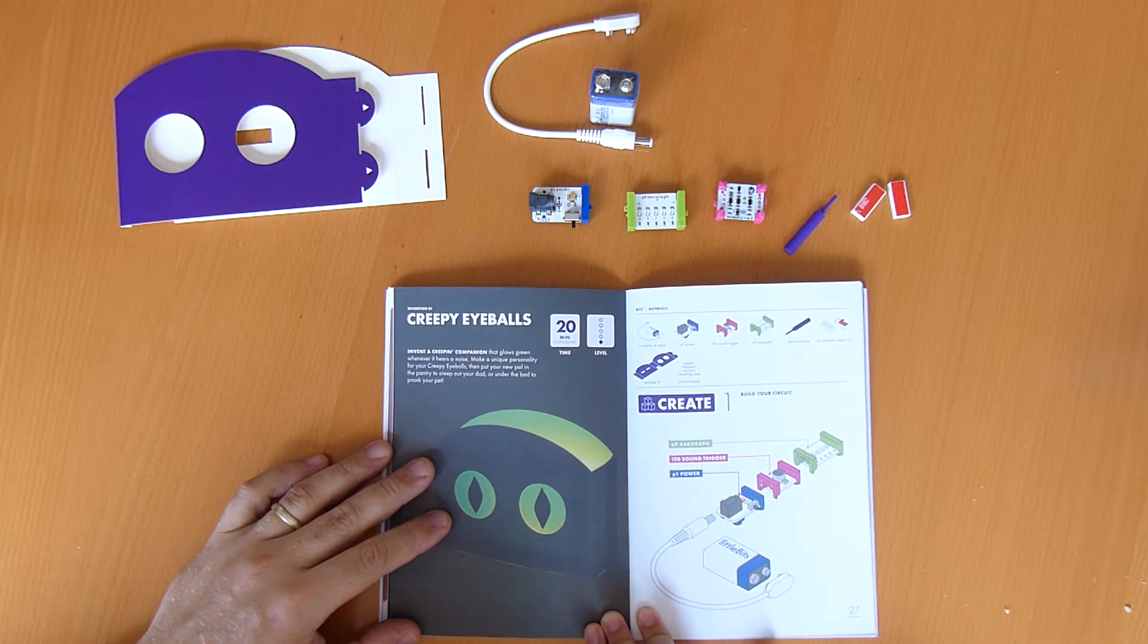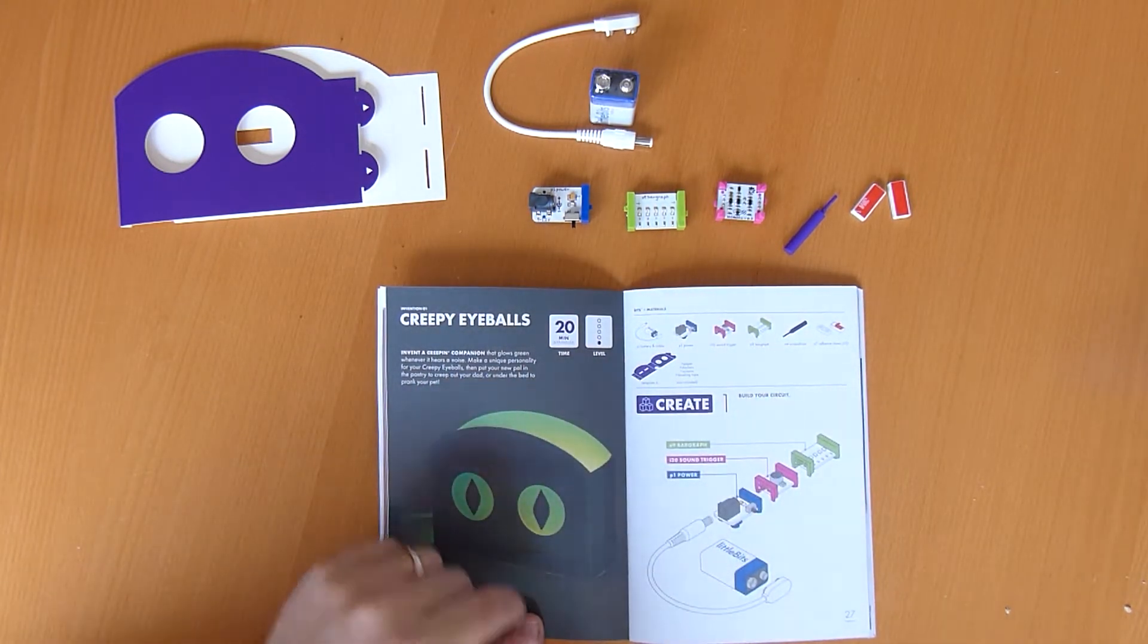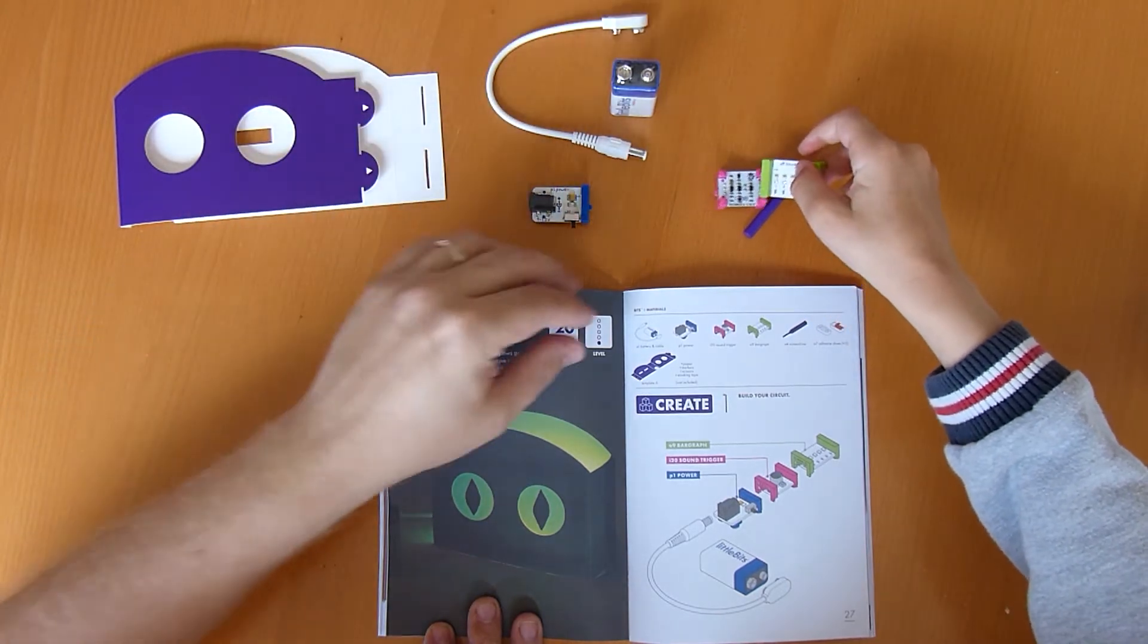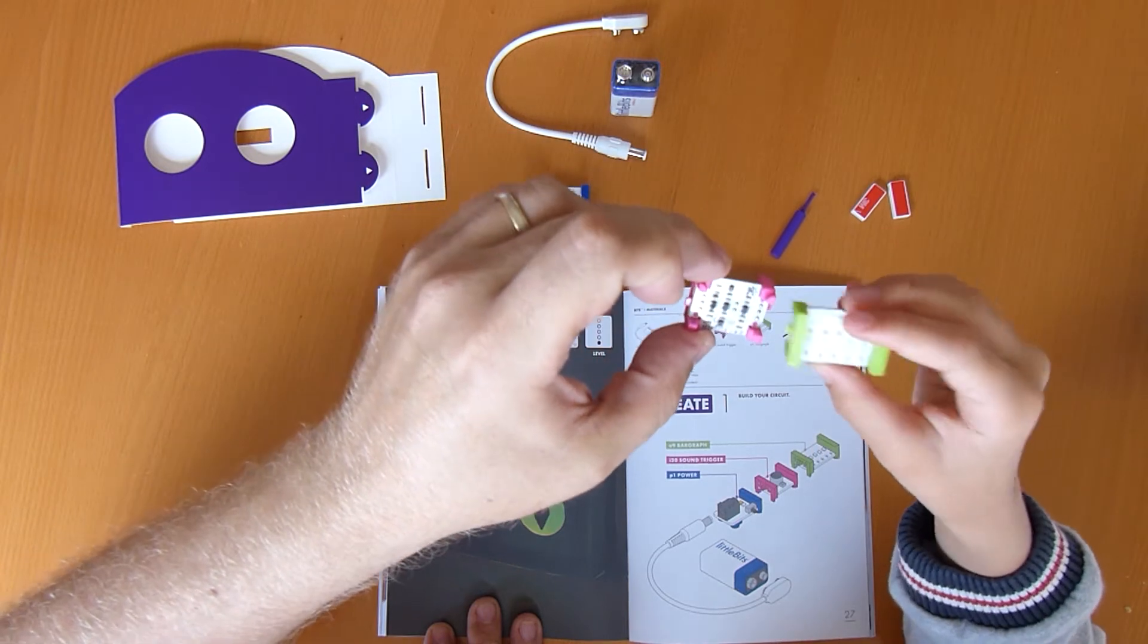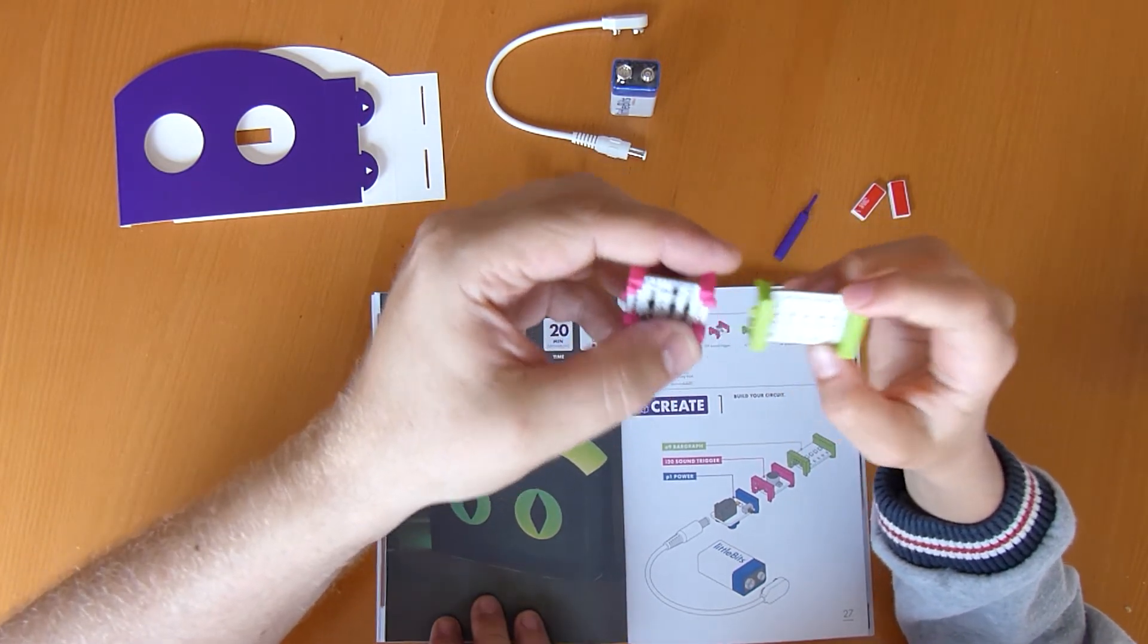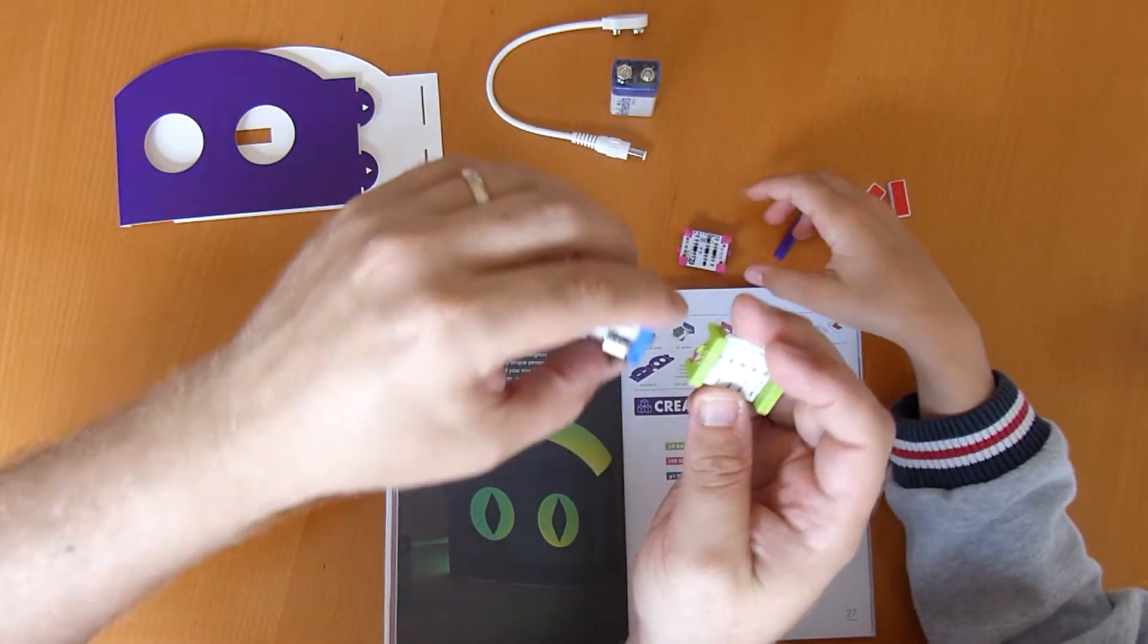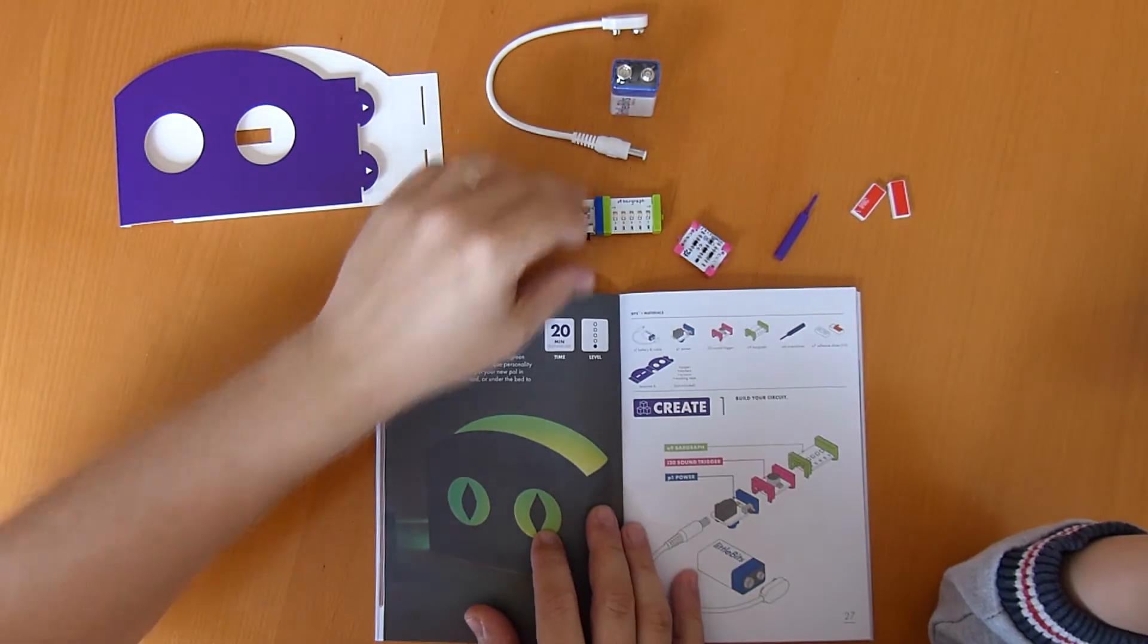So we're going to build this creepy eyeballs kit. We've got instructions here about what parts to get out. We've got our nine volt battery and our lead for the battery. And then we've discovered that these little bits, all the little bits that we're being asked, are magnetic. And when you get them around the right way they actually clip together. Those two definitely do. So you clip them together which is quite fun.